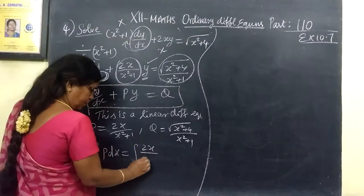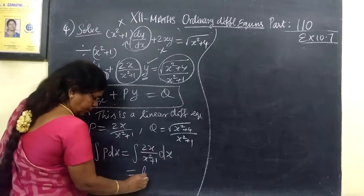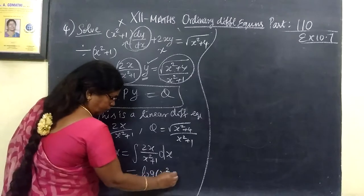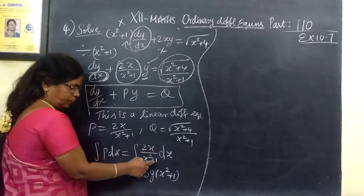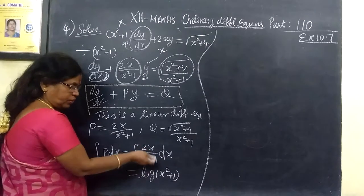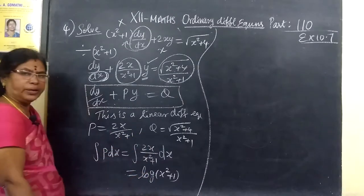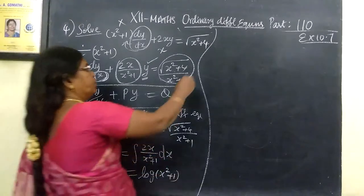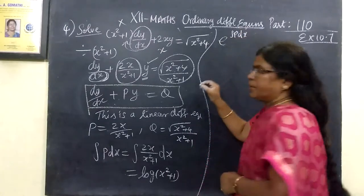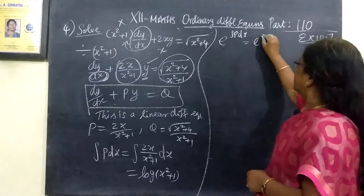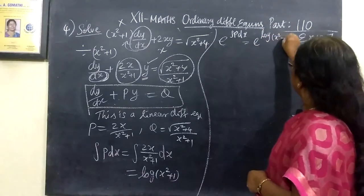The integral of 2x by x squared plus 1 dx. This is nothing but log of x squared plus 1. Because if we differentiate, x squared differentiated gives 2x, and 1 differentiated gives 0. So if the numerator is the derivative of the denominator, the integral is log of the denominator. So e power integral P dx is log x squared plus 1.